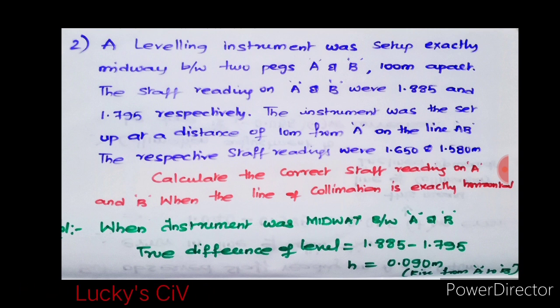As per the derivation we discussed earlier in the video on permanent adjustment, those who have not watched can watch the video again for the derivation and clarity. When the instrument was midway between A and B, true difference of level is 1.885 minus 1.795, that is H equals to 0.090. There is a rise from A to B.